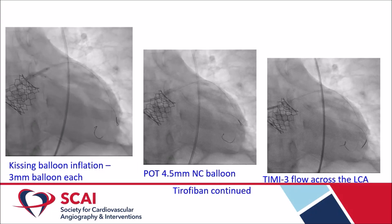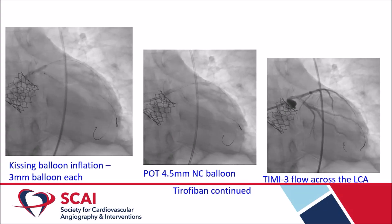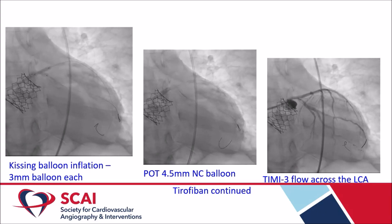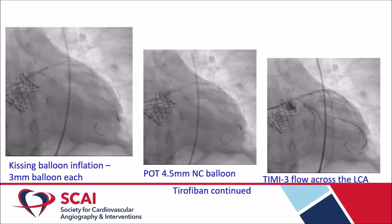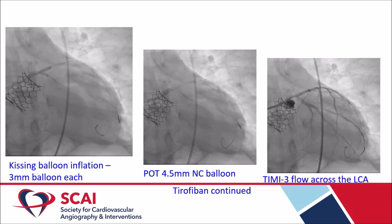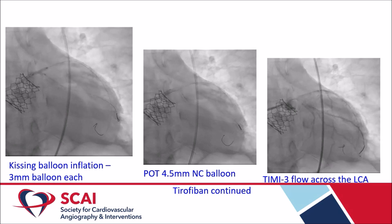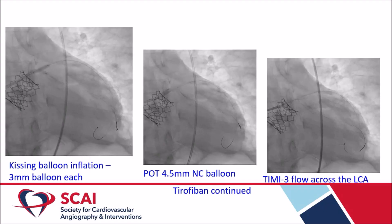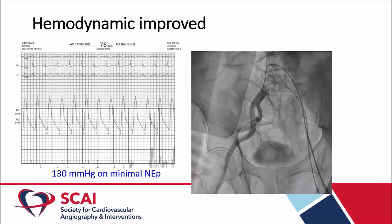The LCX was rewired and dilated with a 2.5 mm balloon, after which flow was achieved across the left circumflex. A 3 mm kissing balloon dilation was performed across the left main bifurcation using a 6F guide catheter. POT was done with a 4.5 mm balloon, achieving TIMI 3 flow across the left system. Some haziness at the ostium and proximal LCX prompted tirofiban infusion. The access site was closed with a ProGlide device.